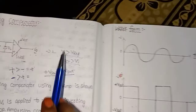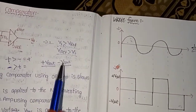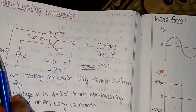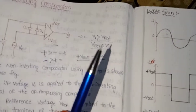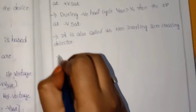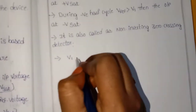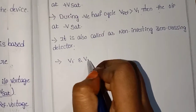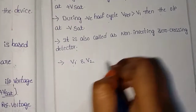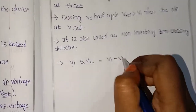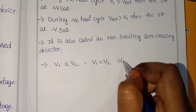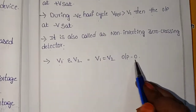Now, there is also a third case. When V1 is equal to V-reference, the output is zero. When the non-inverting terminal input voltage equals V-reference, V1 equals V2, and the output is zero.